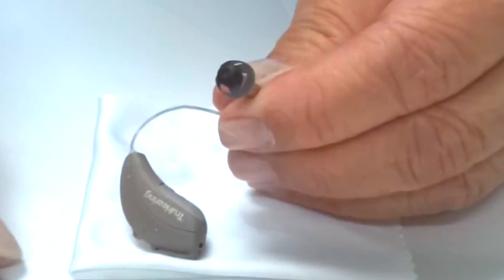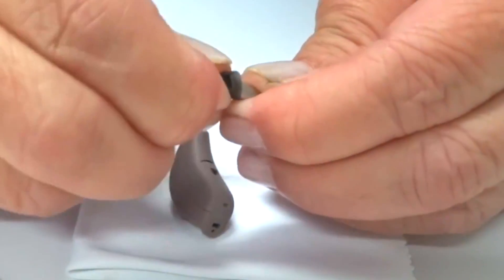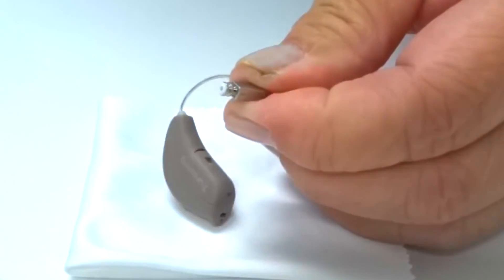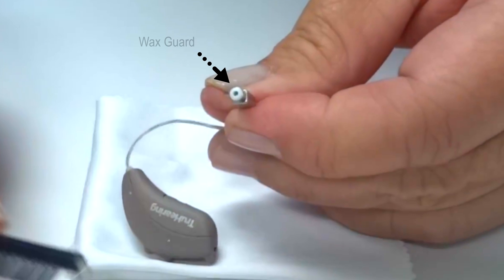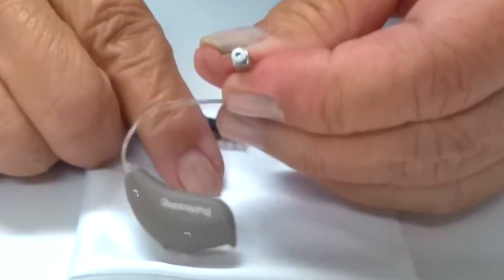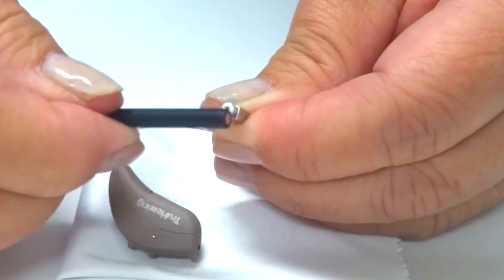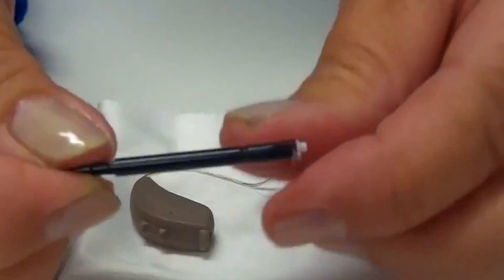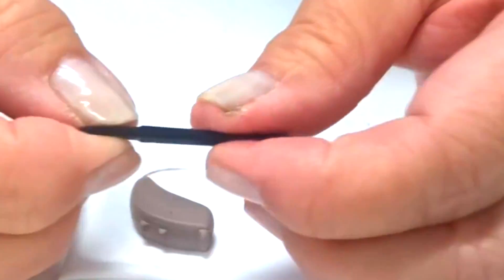This will expose the white wax guard. Try to remove any debris from the wax guard using a brush. If unsuccessful, replace the wax guard with a new one as demonstrated here.